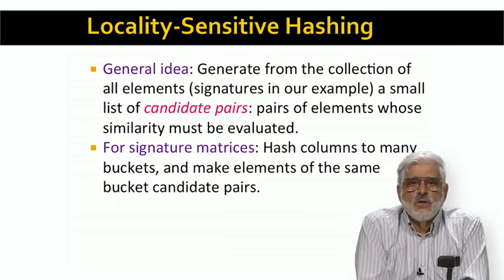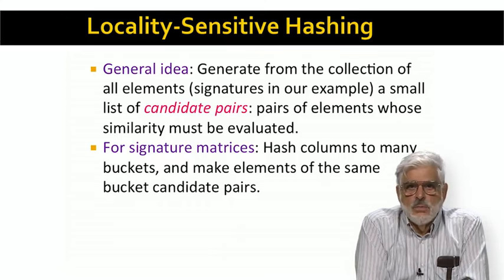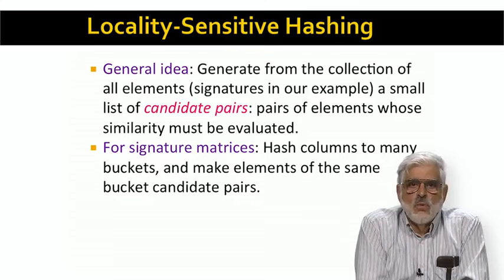We need to tune the number of hash functions and the number of buckets for each hash function so that buckets have relatively few signatures in them, so there are not too many candidate pairs generated. But we can't use too many buckets, or else pairs that are truly similar will not wind up in the same bucket for even one of the hash functions.